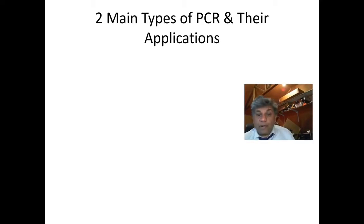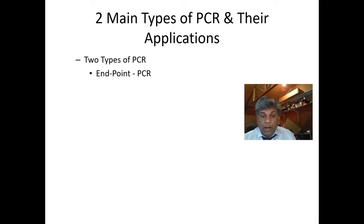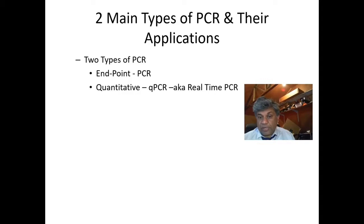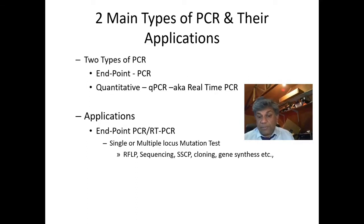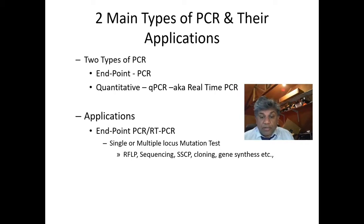There are two types of PCR, and I'm going to talk about their applications. Endpoint PCR is largely used in R&D labs. Its applications include single and multiple locus mutation tests, RFLP restriction fragment-length polymorphism, sequencing, single-stranded confirmation polymorphism, cloning, and gene synthesis. RT-PCR can also use an RNA molecule as your template.